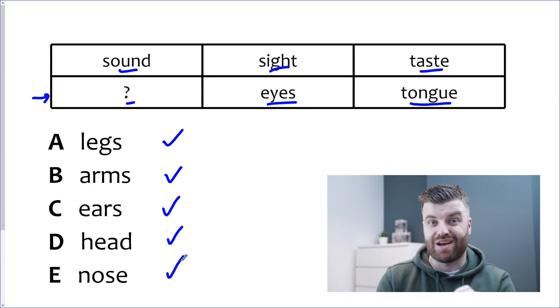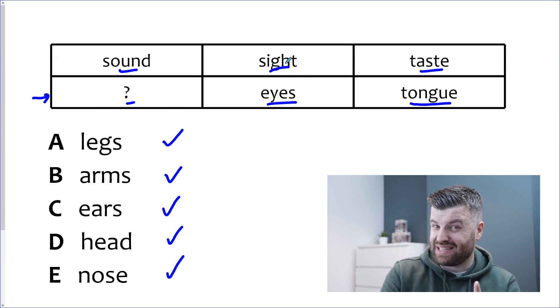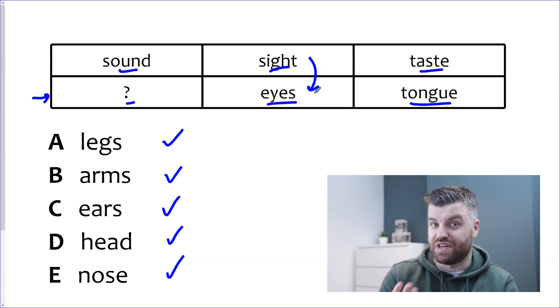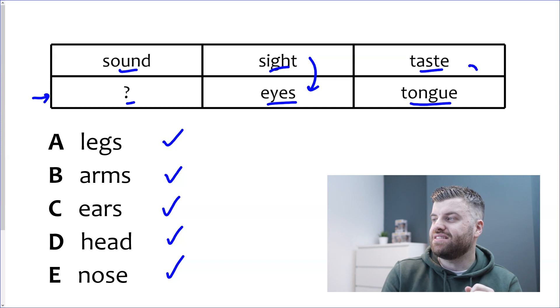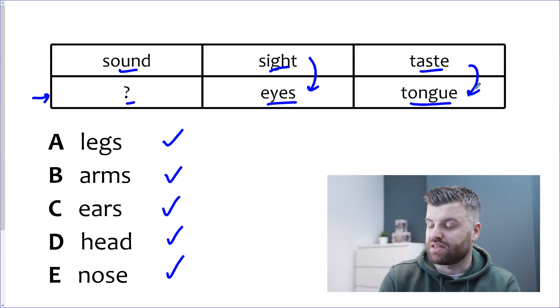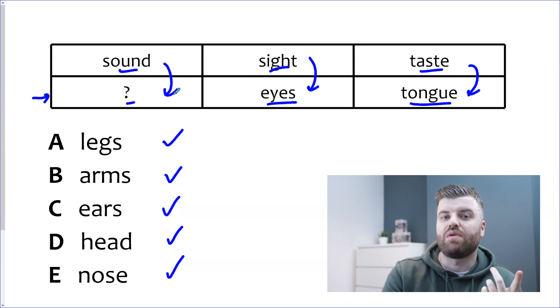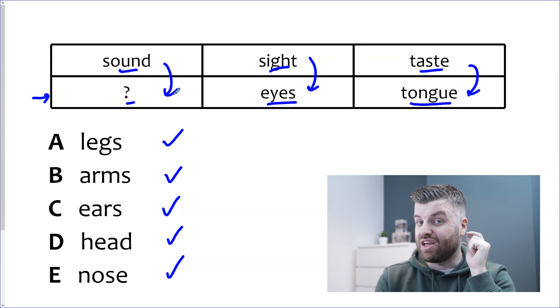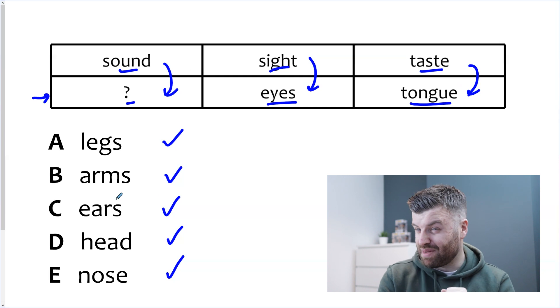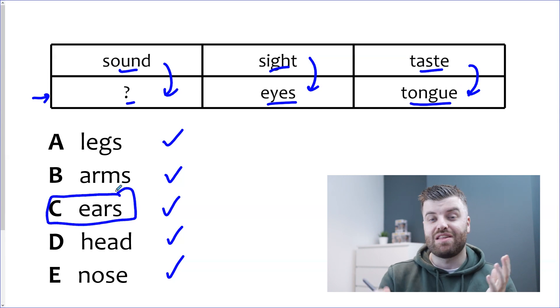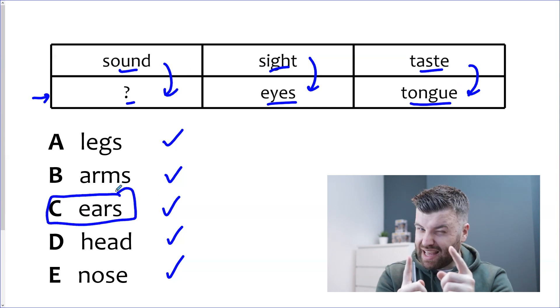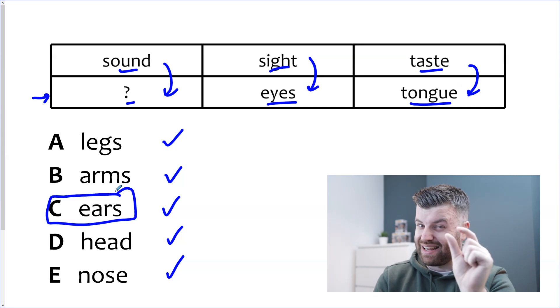So let's go back to the top and try and be more specific and you may have seen it already. Let's look at the middle column. Sight and eyes. You use your eyes for your vision, for your sight. Taste to tongue. Use your tongue to taste things. Okay so what do you use to hear sound? Well that's very specific. It is your ears. Let's see if it's there. I'm pretty sure it was earlier and it is. The answer is C. Just be careful for a specific link.